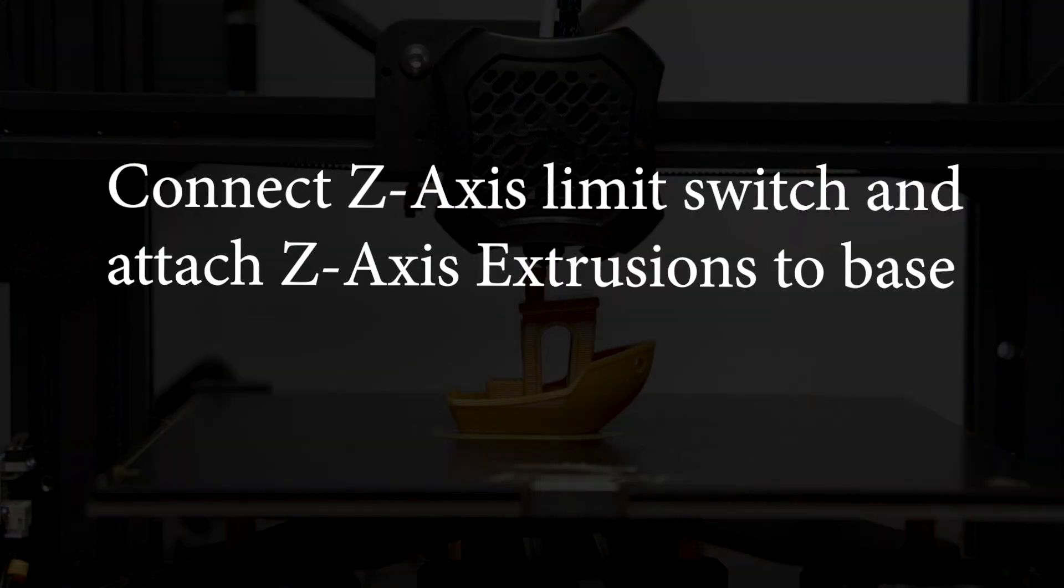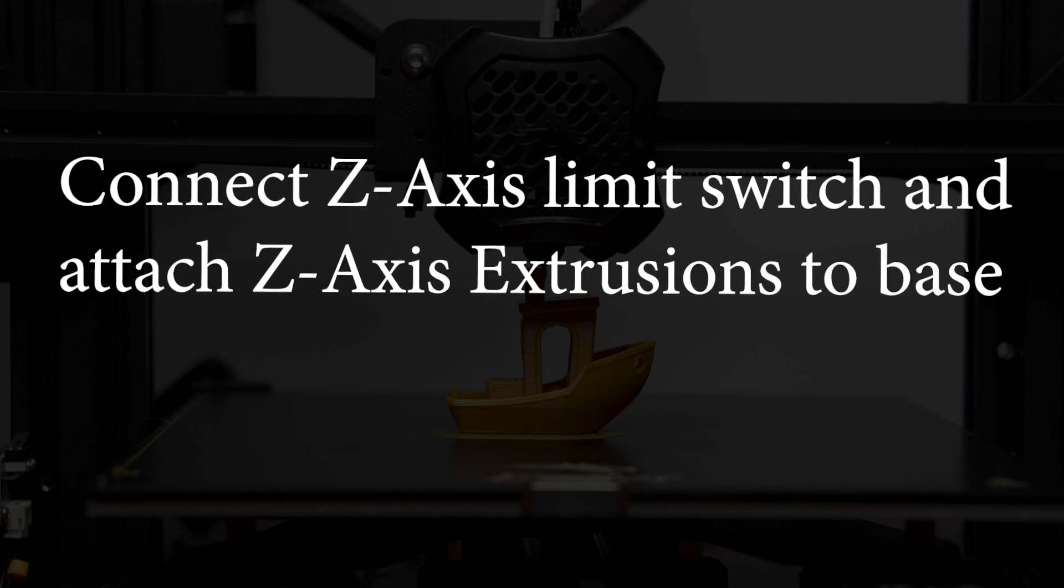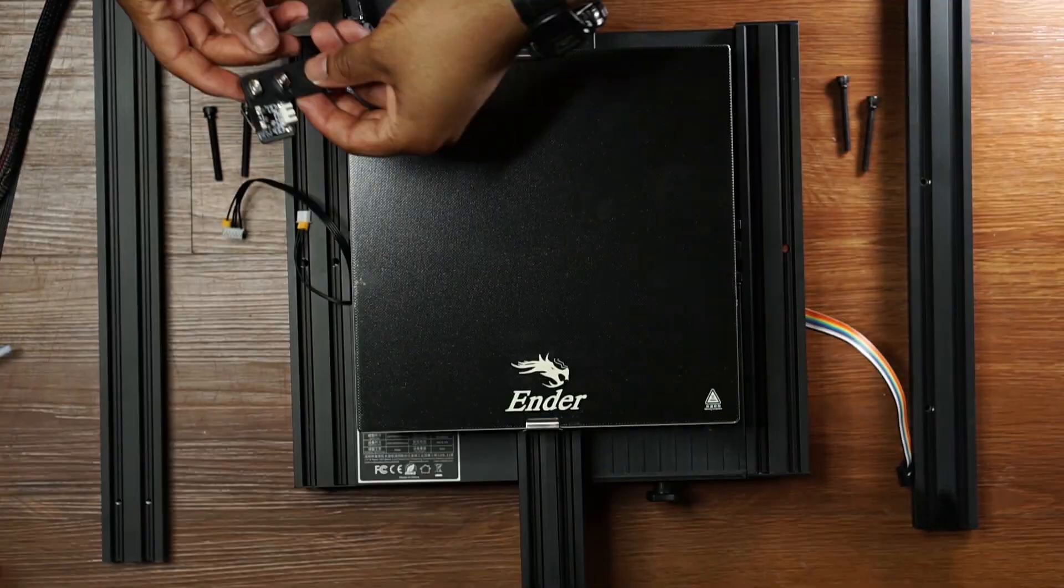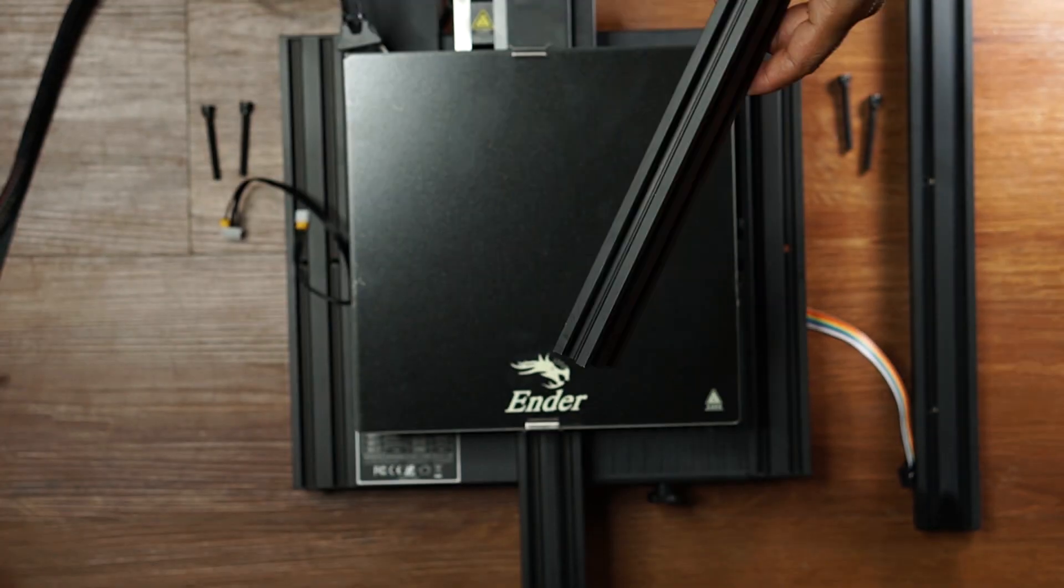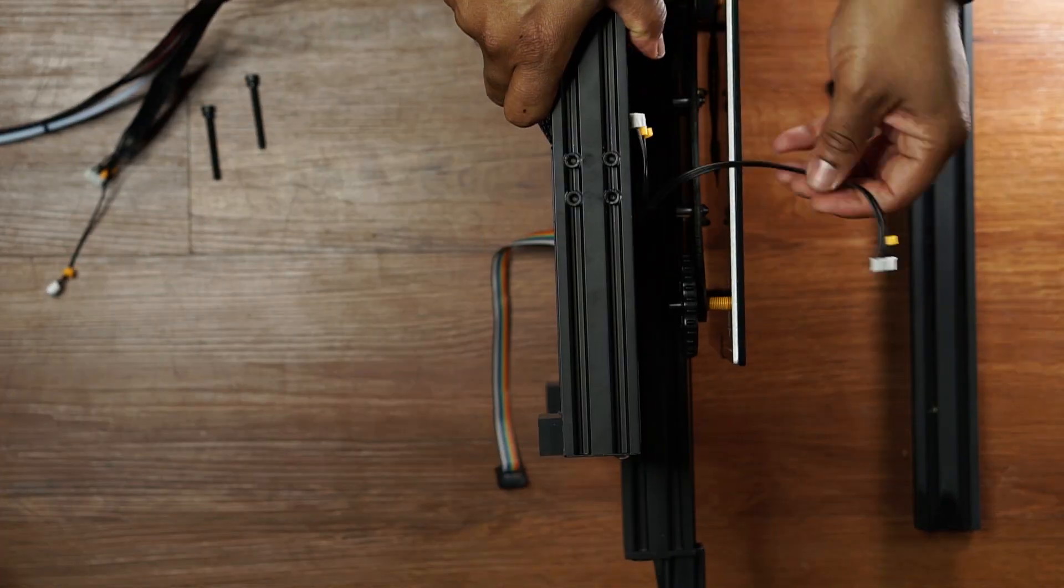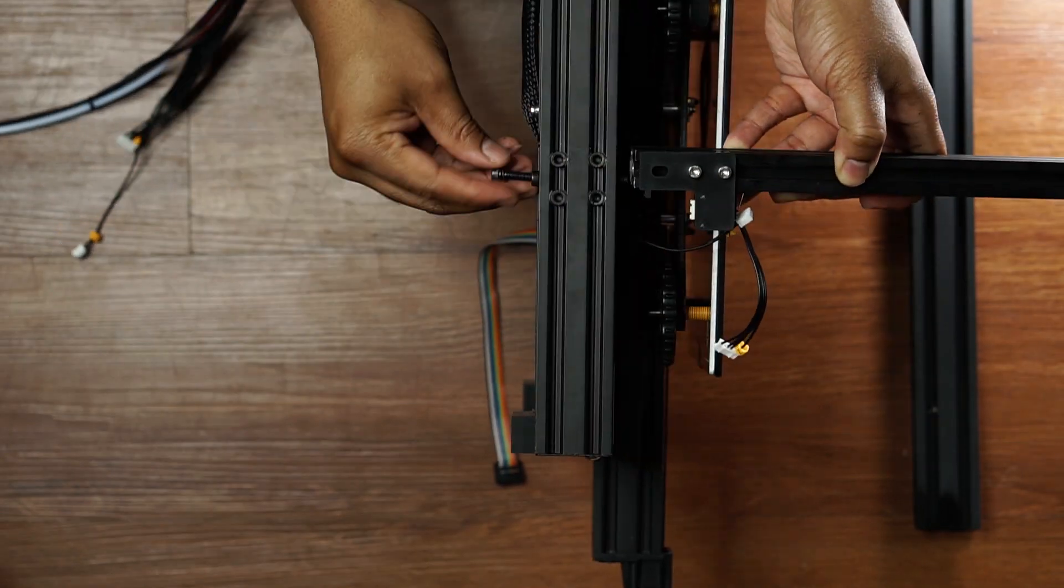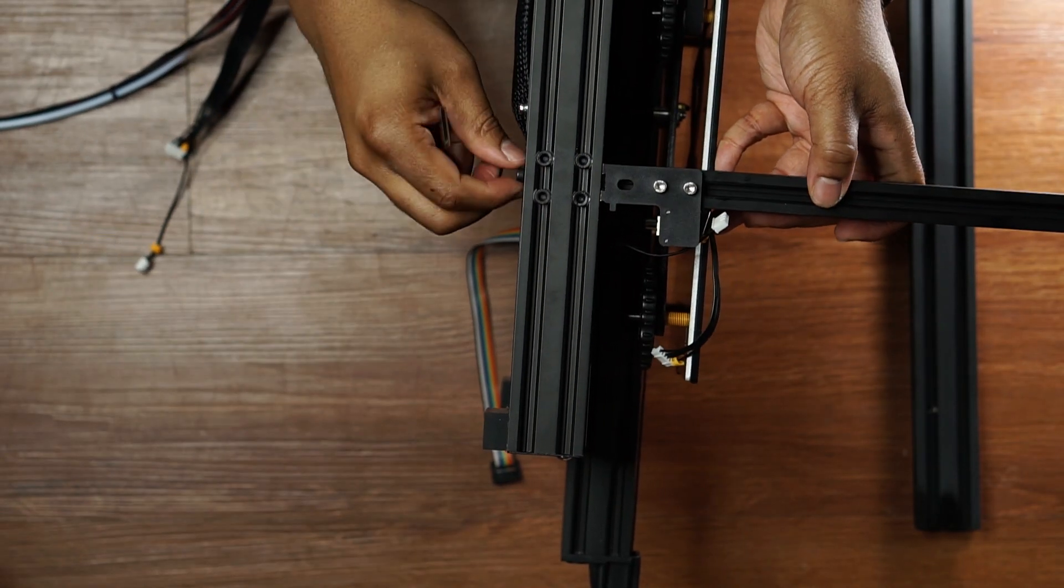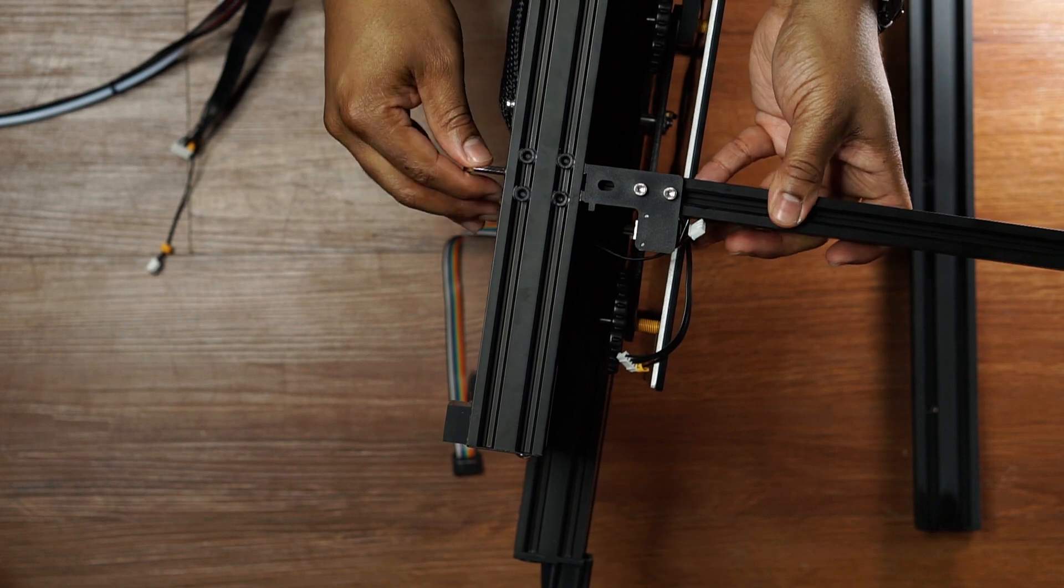First we're going to connect the z-axis limit switch and attach the z-axis extrusions to the base. And as I said, these z-axis extrusions are going to be your side frames. And there is the extrusion with the z-axis limit switch attached.